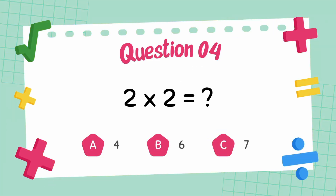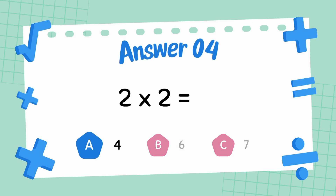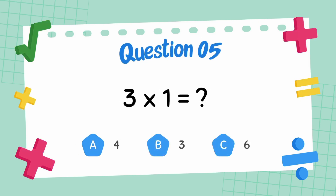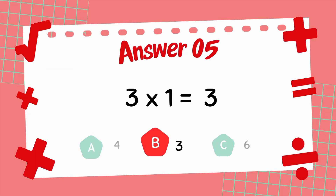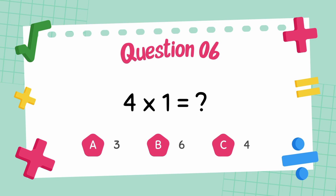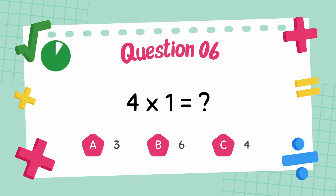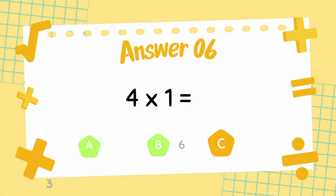What is 2 multiply 2? The answer is 4. What is 3 multiply 1? The answer is 3. What is 4 multiply 1? The answer is 4.